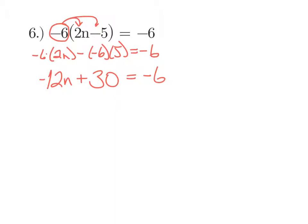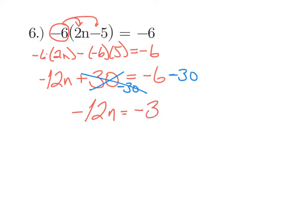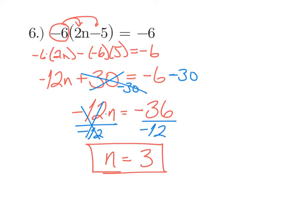Now we have a regular two-step equation. Don't worry about the term with n yet — deal with the adding and subtracting first. Subtract 30 from both sides: 30 minus 30 is 0, leaving negative 12n on the left. Negative 6 minus 30 is negative 36 — use a calculator if needed. Now divide both sides by negative 12. Negative 12 divided by negative 12 is 1, leaving n, and negative 36 divided by negative 12 is positive 3. Now flip your worksheet over to try some problems on your own.